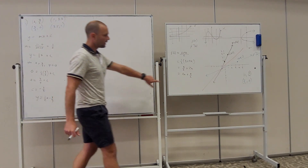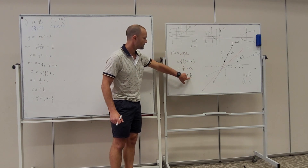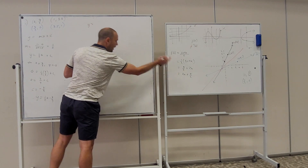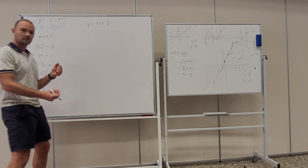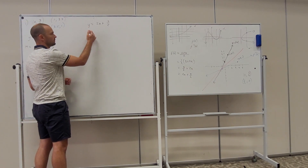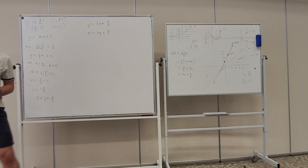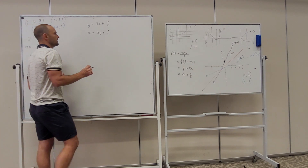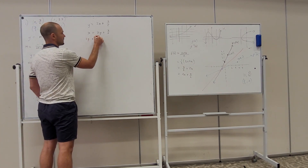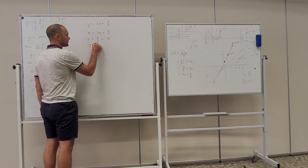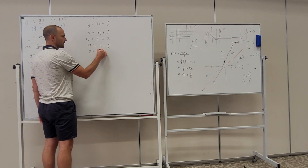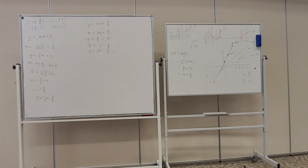The second method is variable interchange. We start with y = 2x + 3/2. To find the inverse, we swap x and y, giving x = 2y + 3/2. Now we solve for y: move terms around, subtract 3/2 from both sides, then divide both sides by 2, and we get the same equation — which confirms our answer.